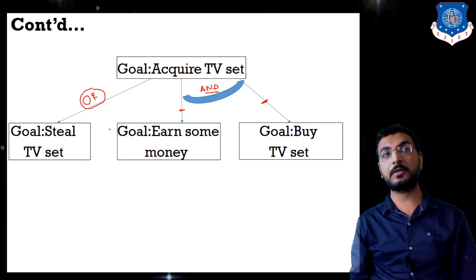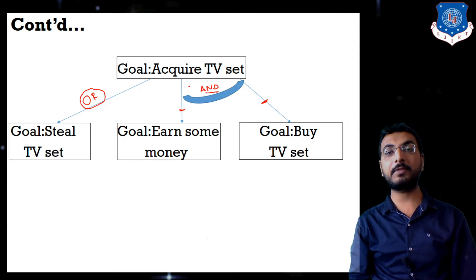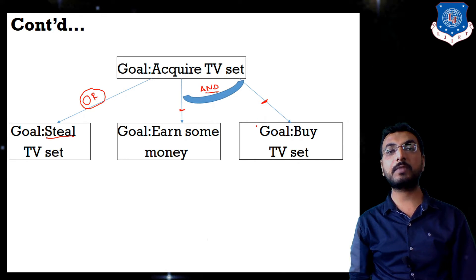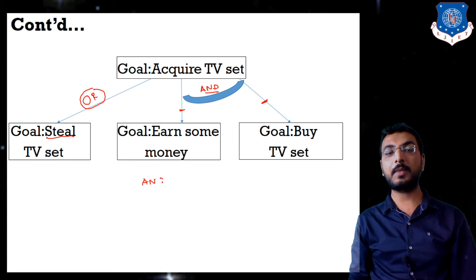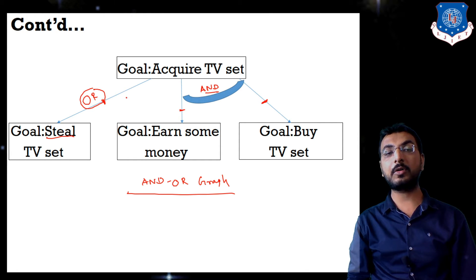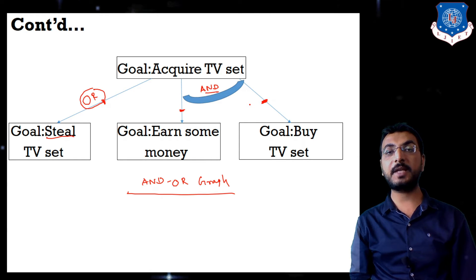If we consider the heuristic function, stealing the TV set is not the better option ethically. The better option is earning money and then purchasing the TV set. This is the formal example of an AND-OR graph, where edges can be connected by OR as well as AND.